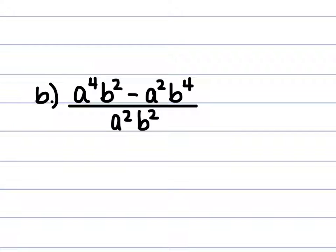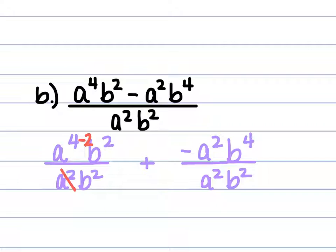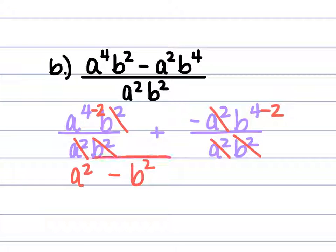For b, we have a⁴b² minus a²b⁴, all over a²b². We split into two fractions: a⁴b² over a²b² gives a² (b's cancel). Then negative a²b⁴ over a²b²: the a's cancel, and b⁴ divided by b² gives b², so minus b². The final answer is a squared minus b squared.